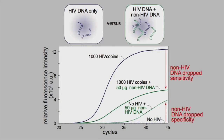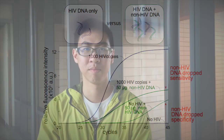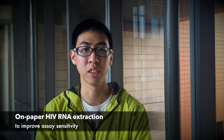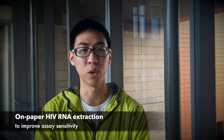My role is to develop a method that specifically captures HIV RNA from human blood samples. Current gold standards for extraction capture both HIV and non-HIV RNA. This process harms the sensitivity of the assay, especially in patients with low viral loads. Being able to capture only HIV RNA will improve the sensitivity of our OLA.